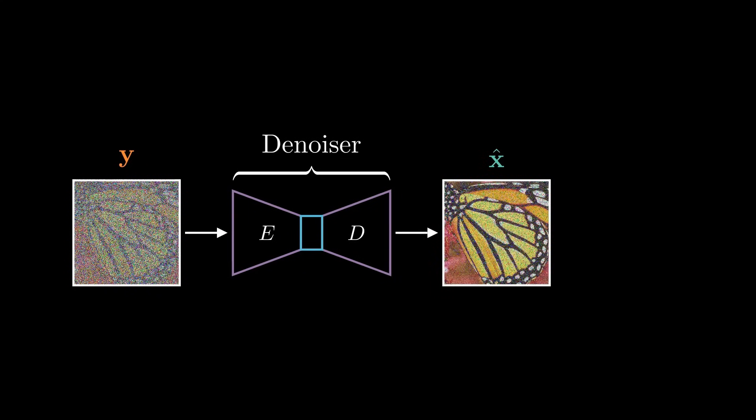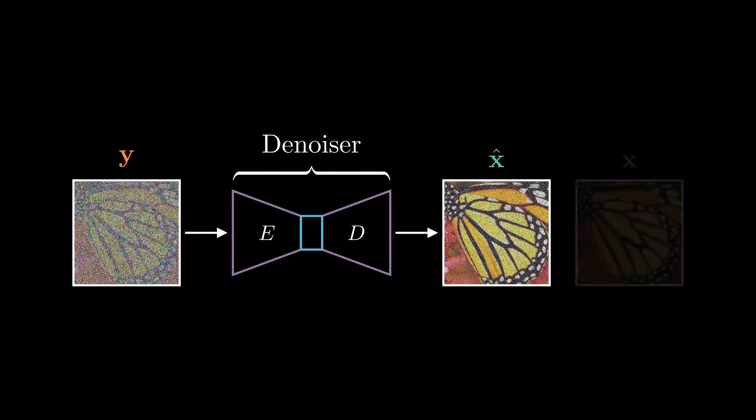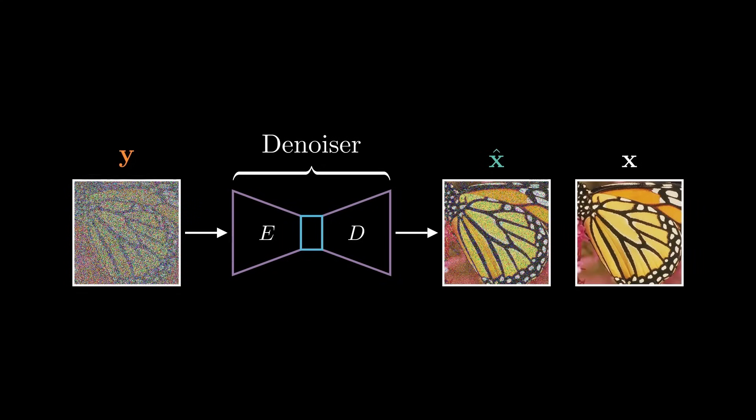Let's take a moment to revisit the key elements we're working with. We start with a noisy image, which we'll refer to as Y. Our goal is to denoise this image and to do that we pass it through an autoencoder. The autoencoder then outputs a denoised version, which we'll call X-hat. However, the denoiser isn't perfect, so X-hat still contains some residual noise. To evaluate its performance, we compare this output X-hat to the original image X. This original image is often referred to as the reference, label or ground truth. If these concepts are not familiar, I think you should check the last video on denoising autoencoders.